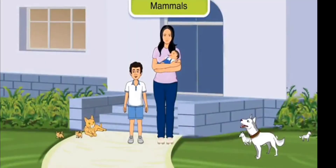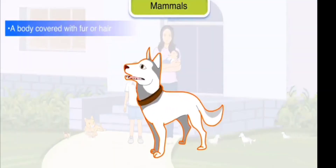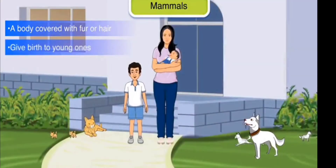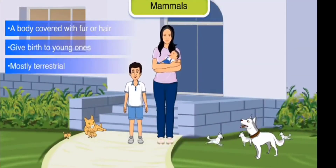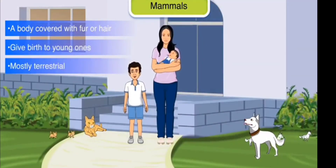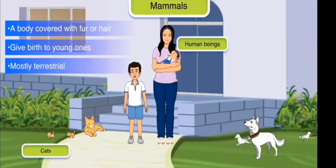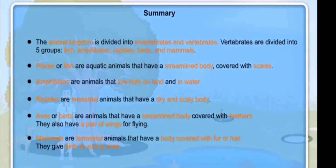Mammals: Mammals are animals that have a body covered with fur or hair. They give birth to young ones and are mostly terrestrial. For example, human beings, cats, and dogs. This was all about vertebrates.